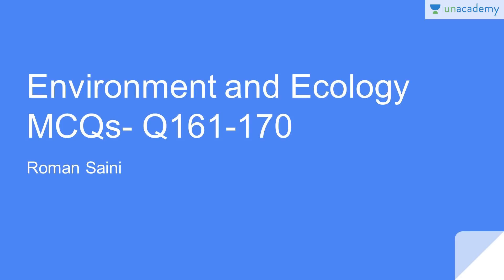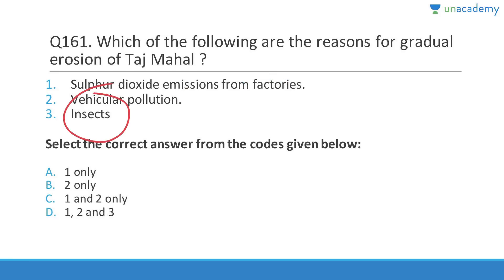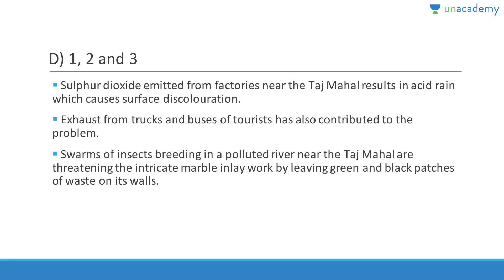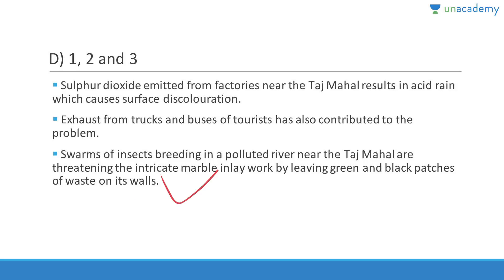The main reasons for gradual erosion of the Taj Mahal are: sulfur dioxide emissions from nearby factories causing acid rain, vehicular pollution from trucks and tourist buses, and swarms of insects breeding in a polluted river near the Taj Mahal, leaving green and black patches of waste on its marble walls. The answer is D — one, two, three.